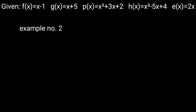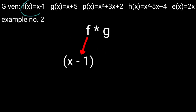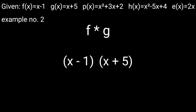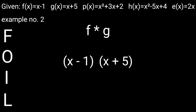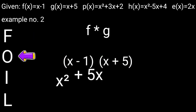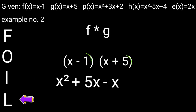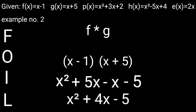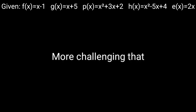Example 2: f times g — substitute f with x − 1 and g with x + 5. Since both are binomials, we use the FOIL method (First, Outer, Inner, Last): x·x + x·5 + (−1)·x + (−1)·5. This gives x² + 5x − x − 5. Combine like terms: the final answer is x² + 4x − 5.